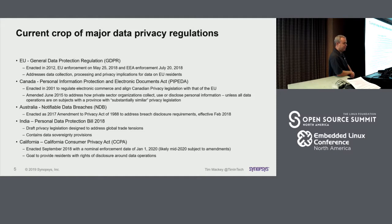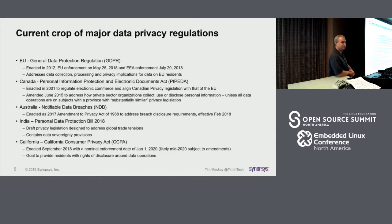Australia has the Notifiable Data Breaches Act. India is in the midst of figuring out their version — a draft bill called Bill 21-2018. While the preceding regulations are centered on managing data, the Indian one has an additional provision around data sovereignty, requiring that the authoritative data source for all Indian residents must be maintained in India. California has their Consumer Protection Act, which nominally comes online in January but has been delayed through amendments to maybe June or July.